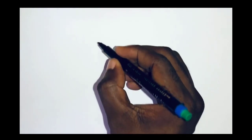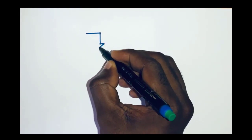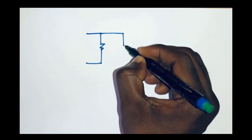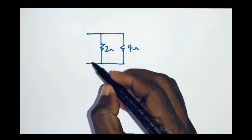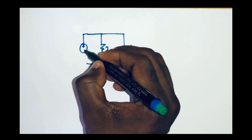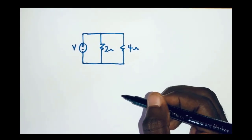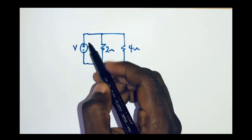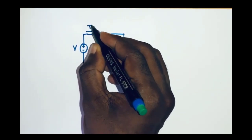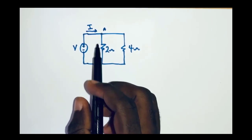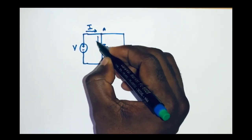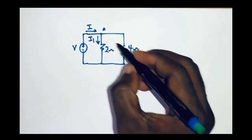Now let's talk about parallel connection of resistors. This is where we have resistors connected such that different currents flow through them. Consider a circuit where we have a 2 ohm resistor connected in parallel with a 4 ohm resistor, along with a voltage source. The voltage source drives current through the entire circuit. Current I approaches junction A, where it divides so that I1 flows through one branch and I2 flows through the other.